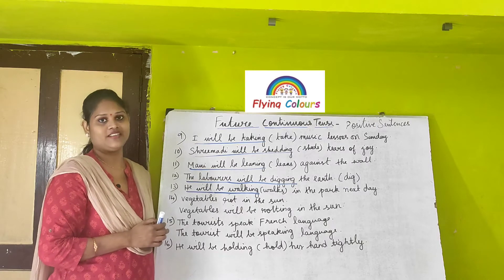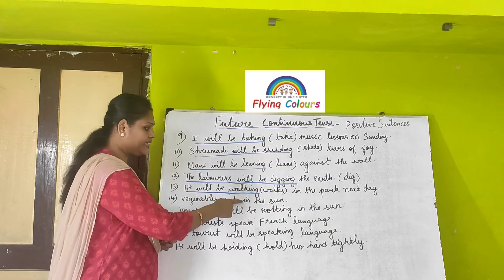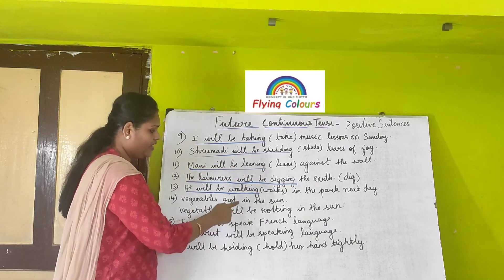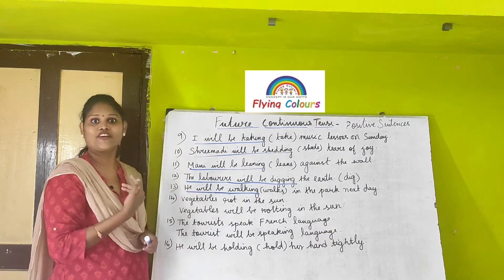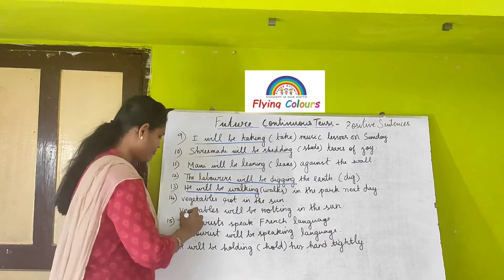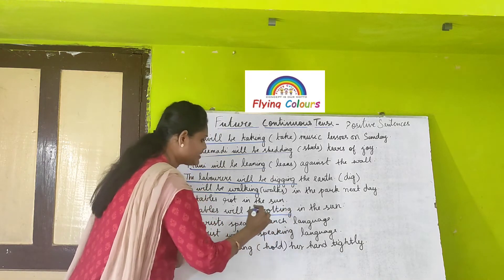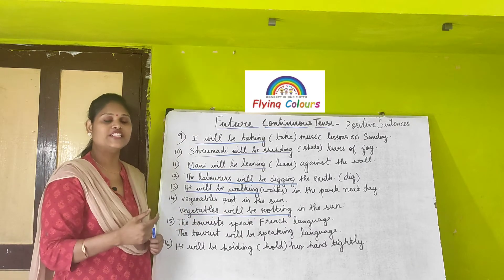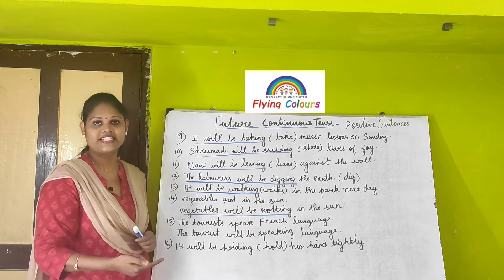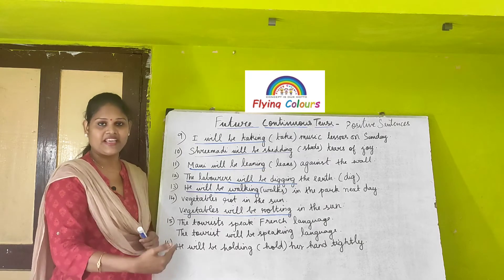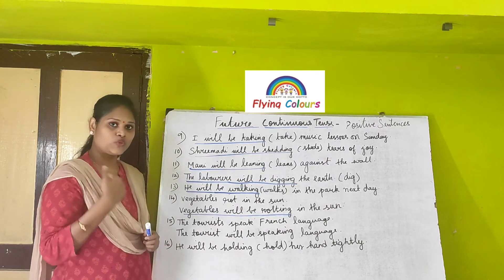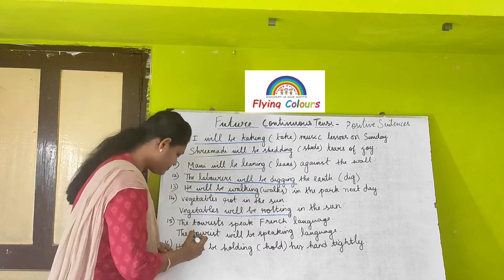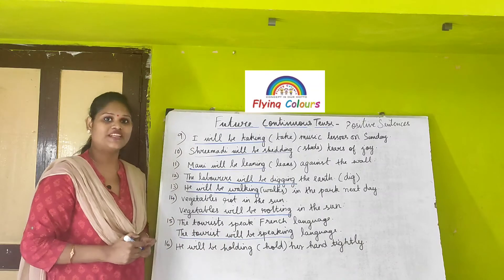Next: 'The vegetables rot in the sun.' You need to convert this into future continuous tense: 'The vegetables will be rotting in the sun.' 'Rot' becomes 'rotting.' You may get this kind of conversion pattern in your academic exam. Then: 'The tourists speak French language.' Converted to future continuous: 'The tourists will be speaking French language.' 'Speaking' is the present participle of 'speak.'